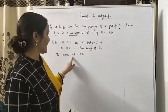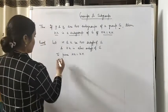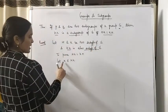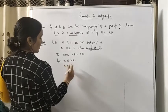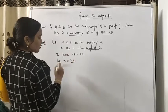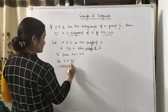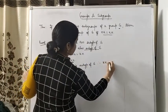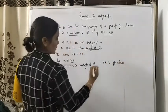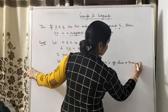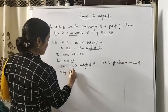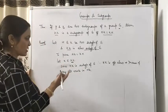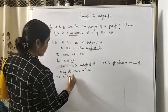Let H and K be two subgroups of G and HK is also subgroup of G. And to prove: HK = KH. अब हम show करेंगे कि HK ⊆ KH और KH ⊆ HK. So let X belongs to HK. HK subgroup है। Since HK is subgroup of G, therefore HK is a group also. So inverse of every element exists in HK. This implies X⁻¹ also belongs to HK.